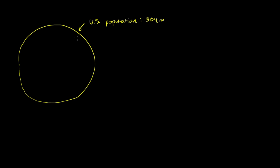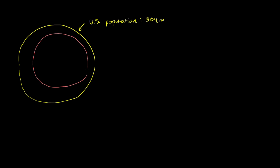Not all of those 304 million people are capable of working, including my two and a half year old son or my newborn daughter. When you think about unemployment, you want to think about the percentage of people that are actually old enough to work. So this subset right over here is 16 years and older — people who can legally work.